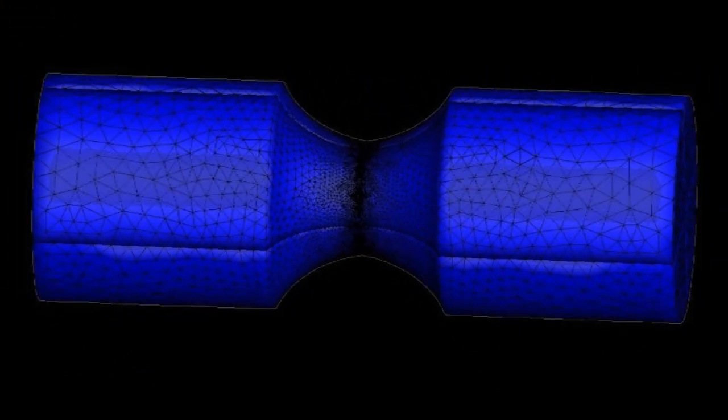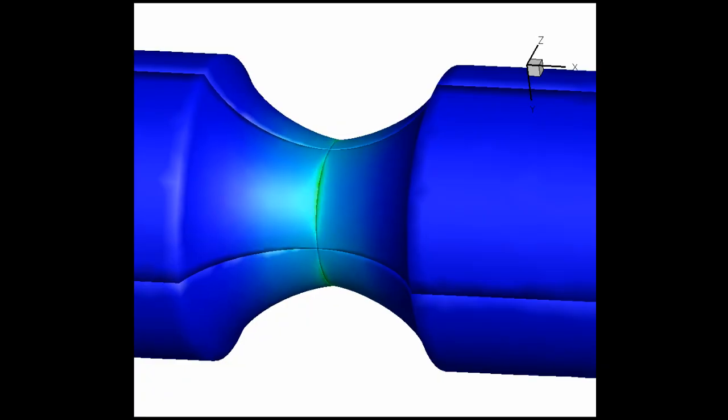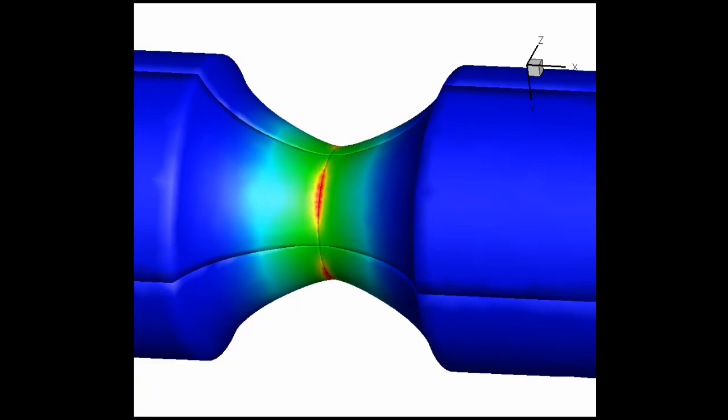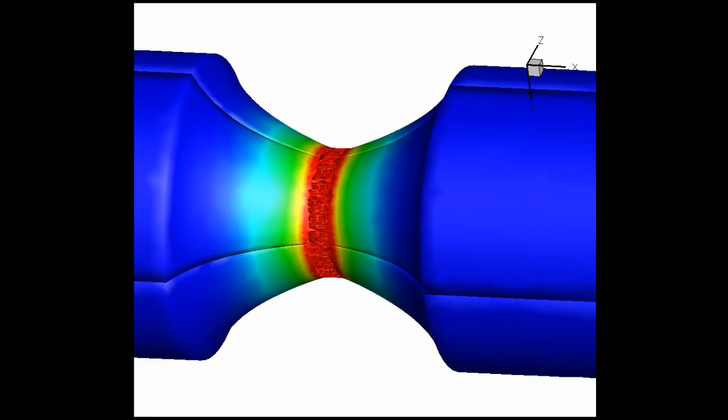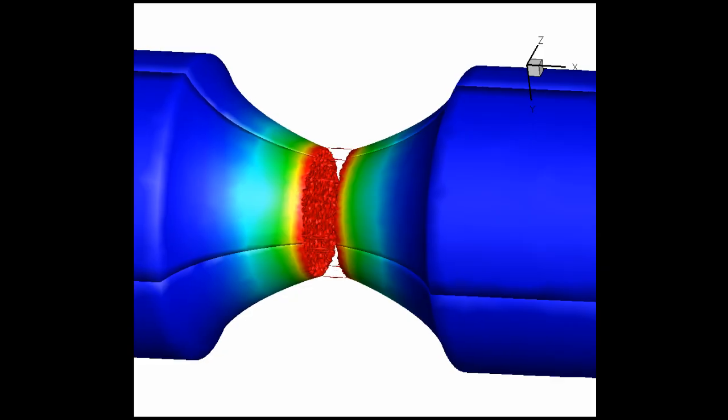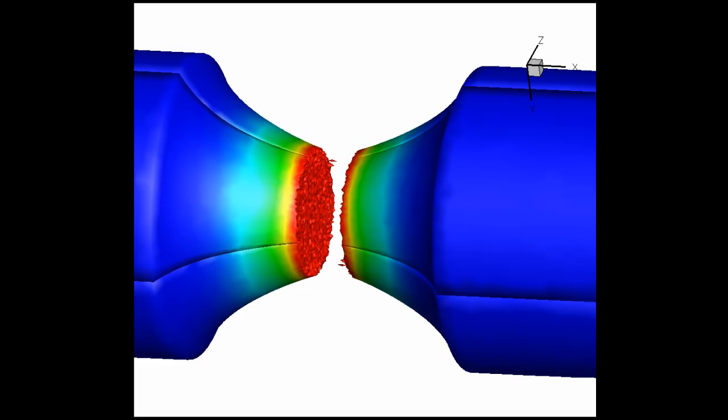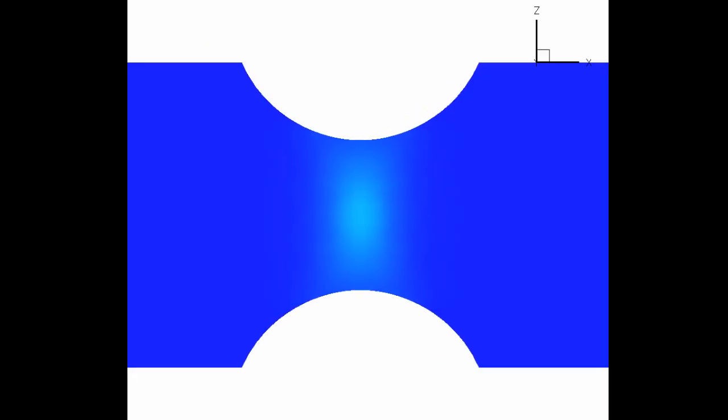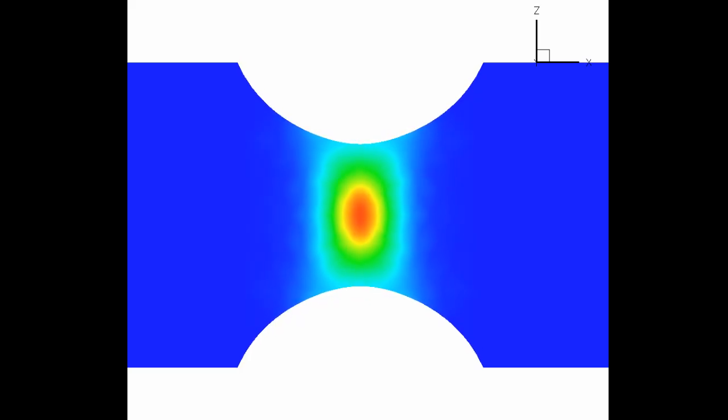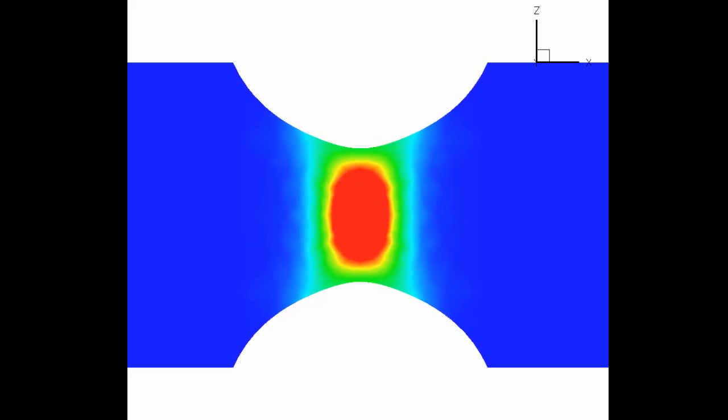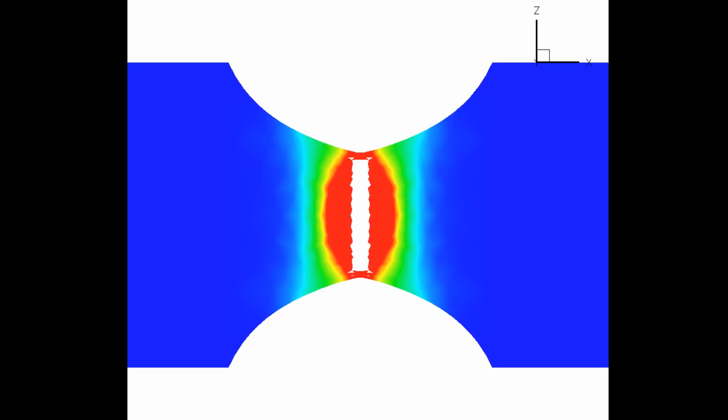The simulation you see here is another tension test where this notched bar is pulled until it fails. One of the very useful things about computational simulations is that we are able to look inside the material to see how the failure process occurs. You can see here that failure occurs as a crack that starts at the center of the member and propagates outward.